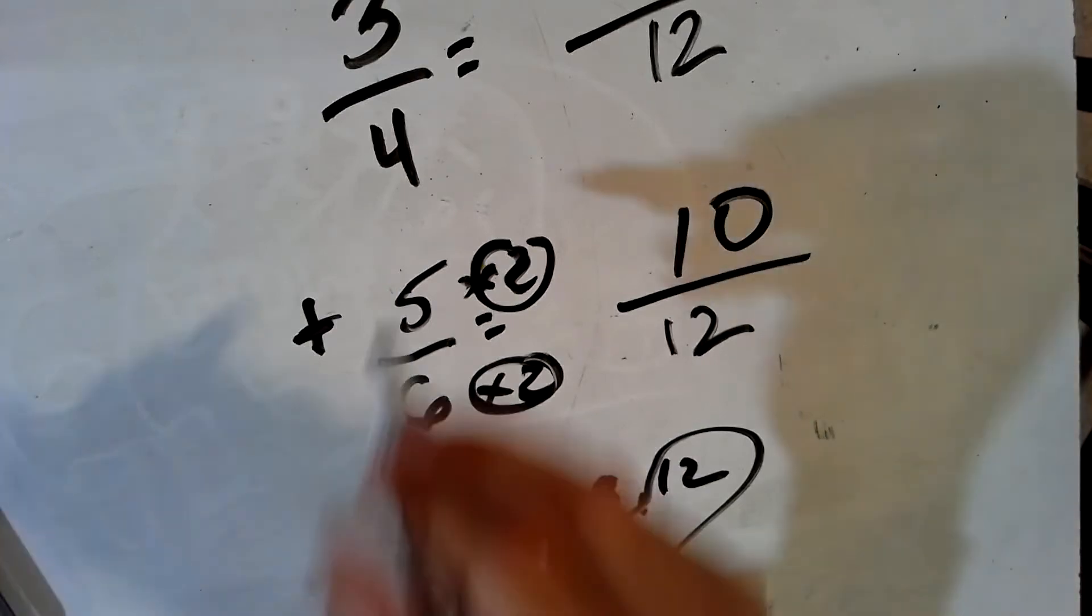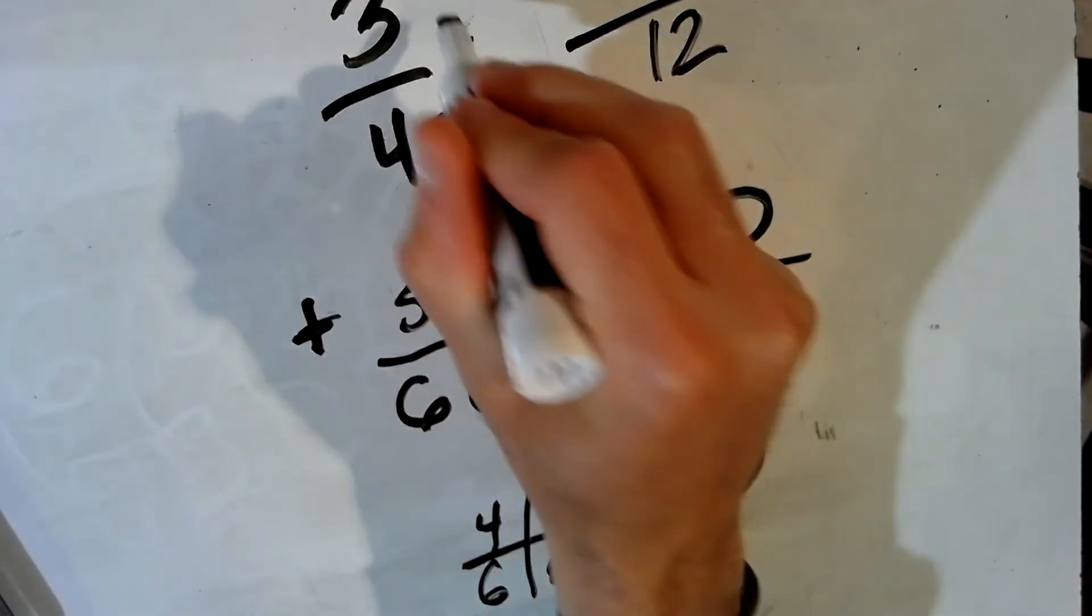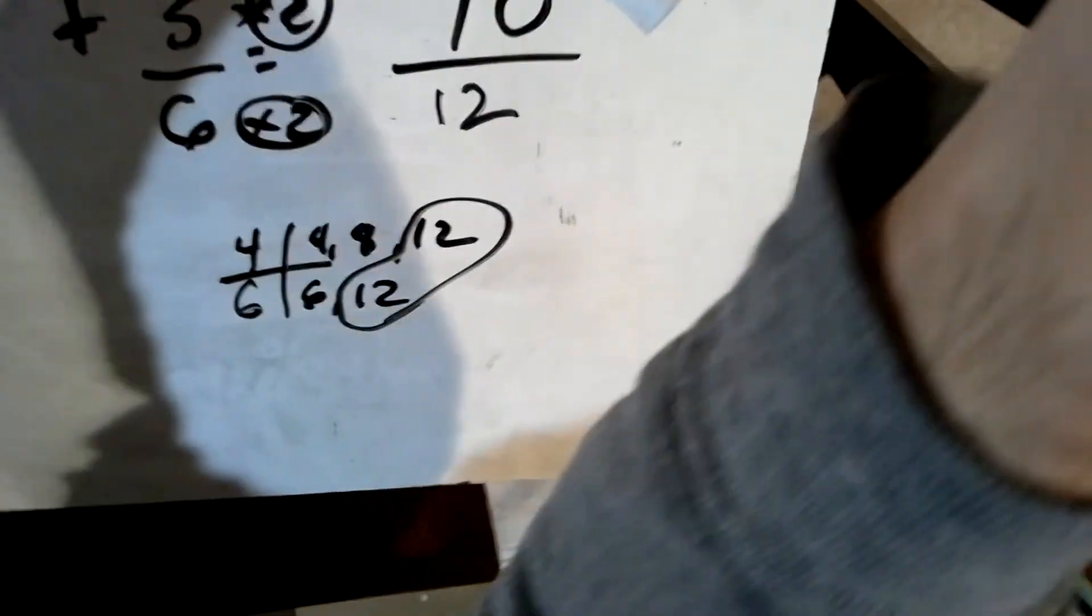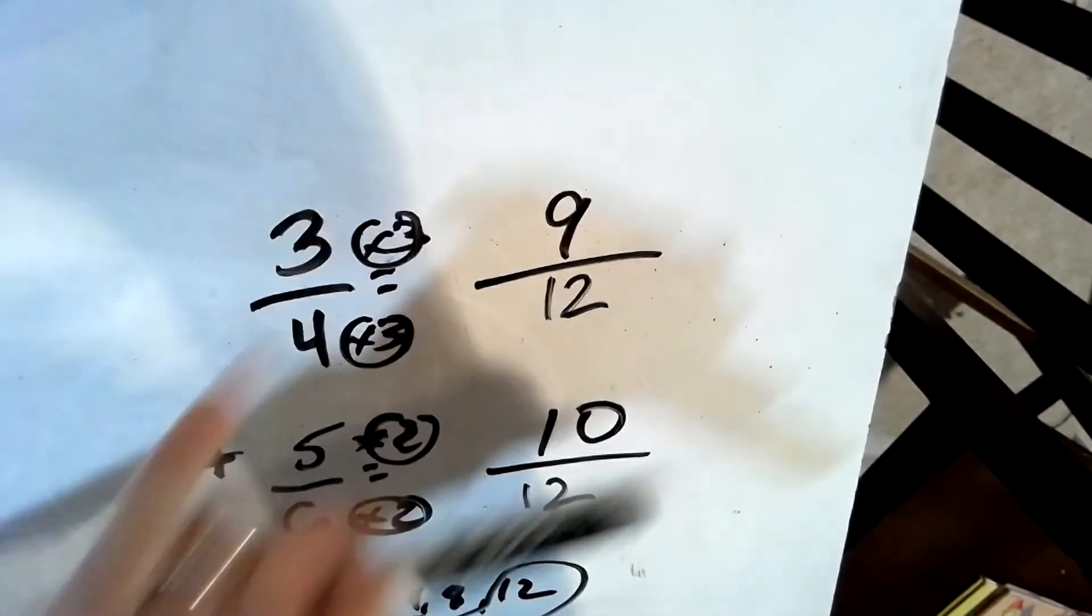And 3 fourths, 4 times 3 is 12, so 3 times 3 is 9. So now I've got 9 twelfths. Sorry, guys. That's better.